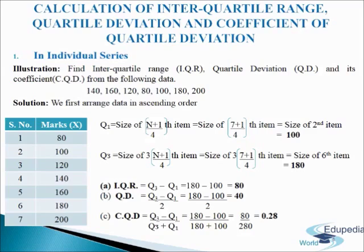Now we will calculate interquartile range. IQR formula is Q3 minus Q1, so it will be 180 minus 100, giving us 80 as IQR. Next is QD, that is quartile deviation. The formula is Q3 minus Q1 divided by 2. After applying the values we get 40 as quartile deviation. For coefficient of quartile deviation, the formula is Q3 minus Q1 divided by Q3 plus Q1. After calculating we get 0.28 as coefficient of quartile deviation. This is how we calculate quartile deviation, interquartile range and coefficient of quartile deviation in individual series.